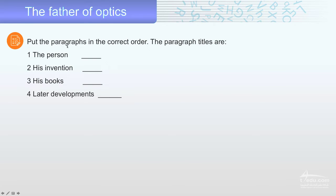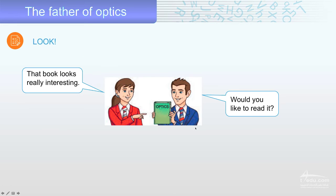Put the paragraphs in the correct order. The person, his invention, his books, later developments. One is the person, two is D, three is paragraph C, and four is paragraph A. Got it?